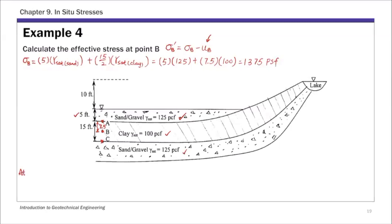Point A is at the bottom of the top sand layer, and the water table is at the ground surface. If you put a standpipe at point A, the water is going to rise up to that free water table surface. So the pore water pressure at A equals the height of the water column inside the standpipe — which is five feet — times the unit weight of water, giving 312 PSF. The water at point A is under hydrostatic conditions.